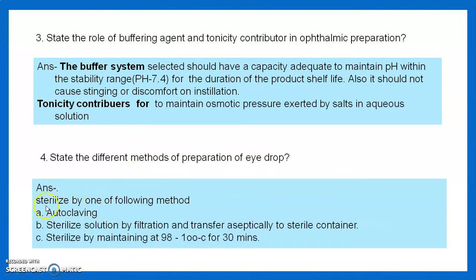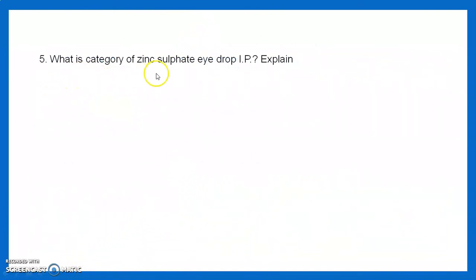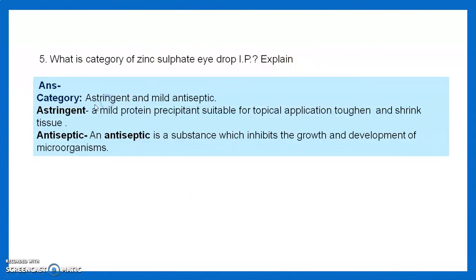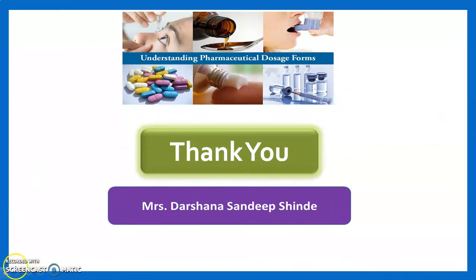Different methods of preparation of eye drops: by autoclaving, by filtration and aseptic filling into a sterile container, and by heating at 98 to 100°C for 30 minutes. The category of zinc sulfate eye solution IP is astringent and mild antiseptic. Astringent means a mild protein precipitate suitable for topical application that tightens or shrinks tissue. Antiseptic is a substance which inhibits the growth and development of microorganisms. Thank you for attending this practical session.